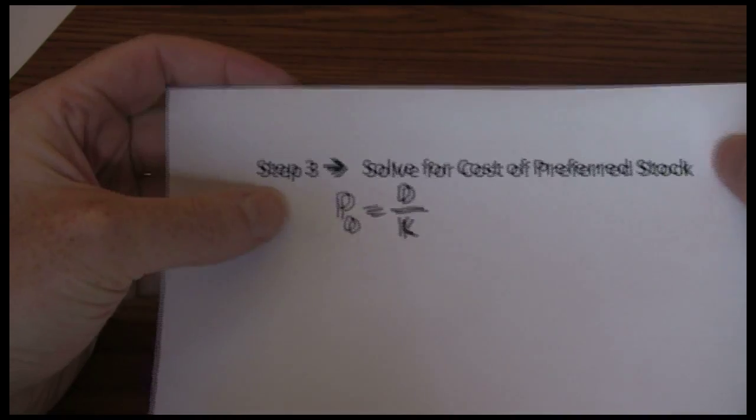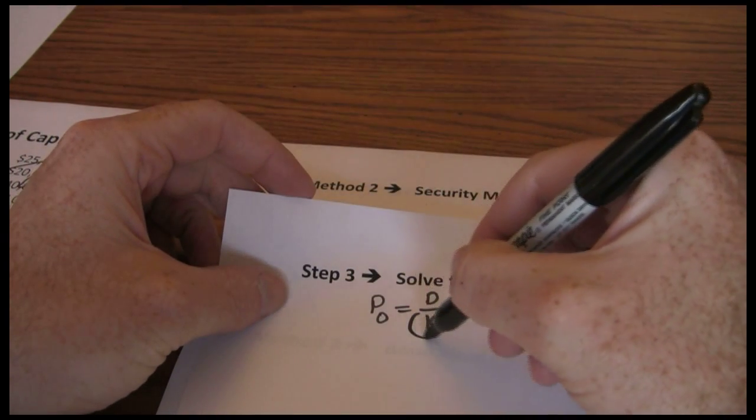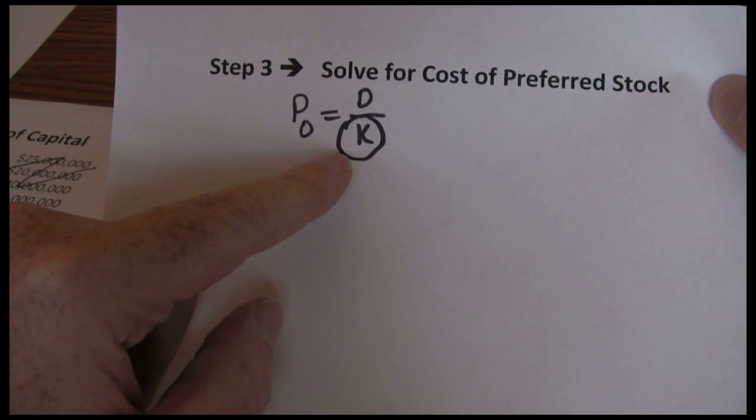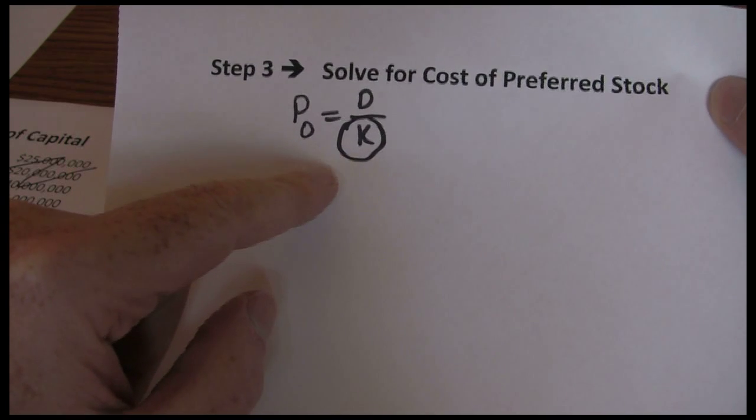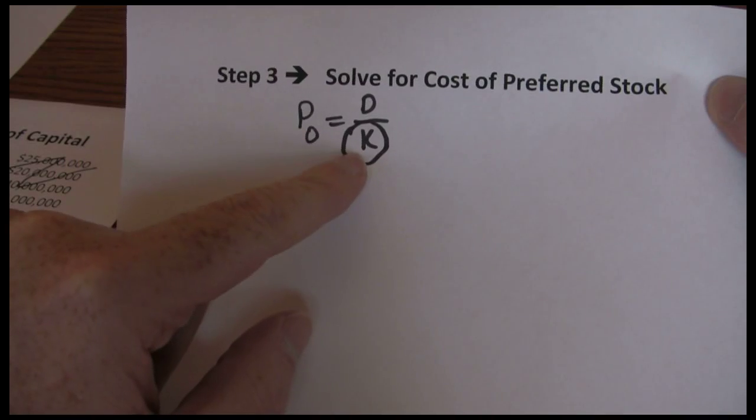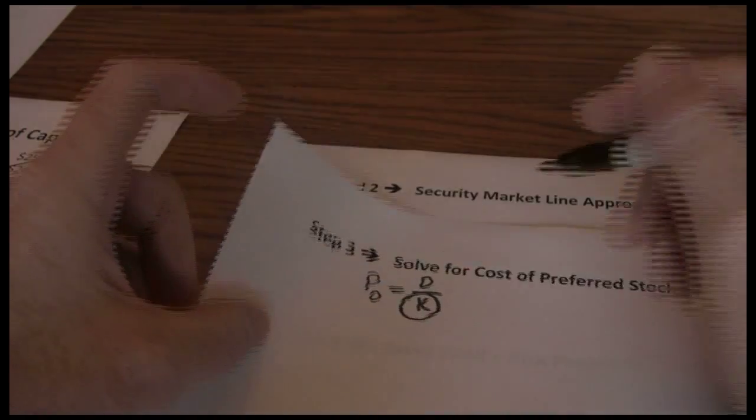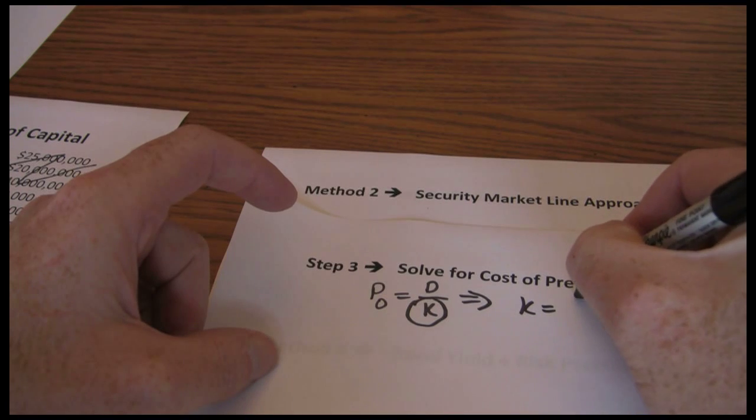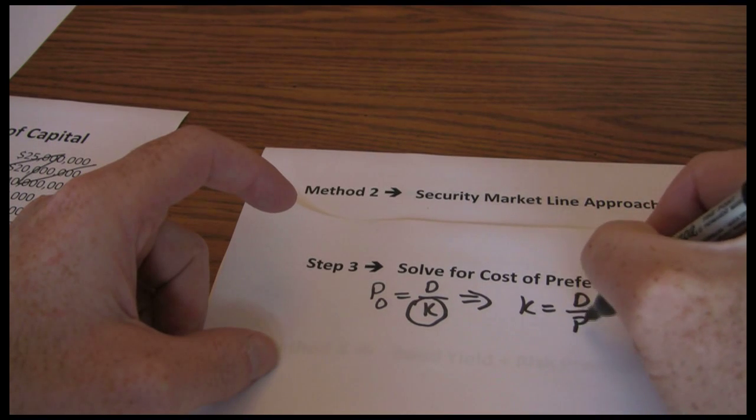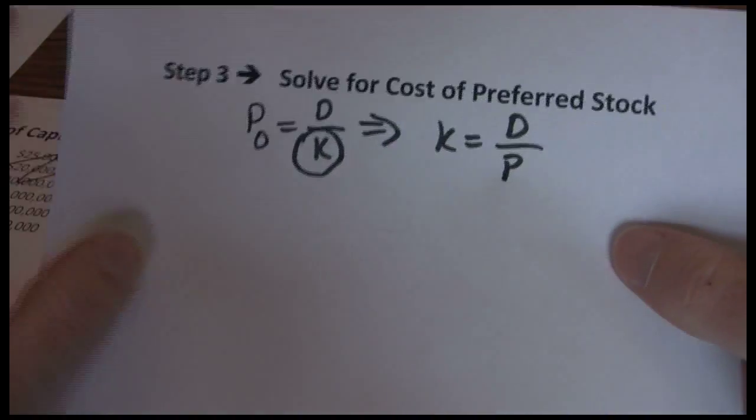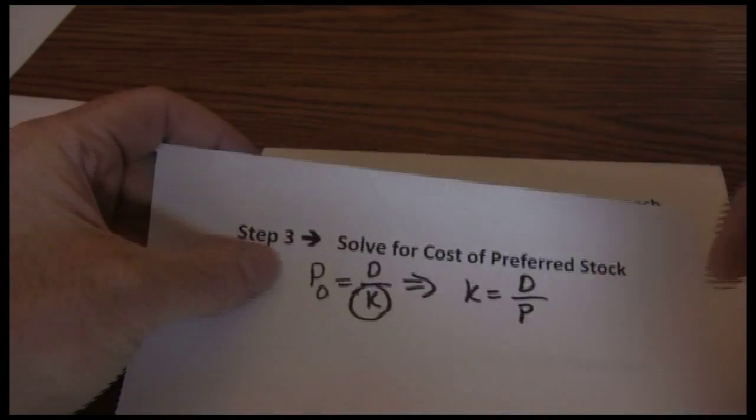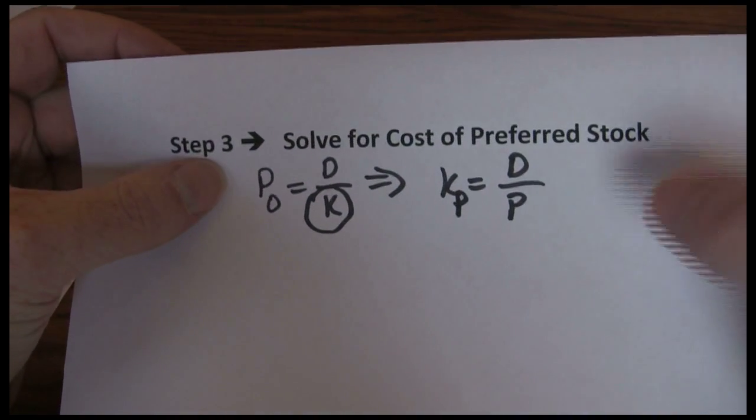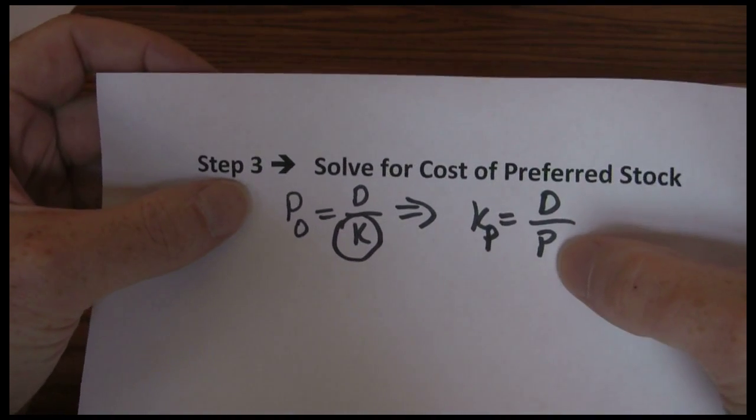Now the cost of preferred stock is going to be that required return that we used in the valuation model because the return to investors is the cost to the firm. So we just want to solve for that required return, and when we do that, we're going to end up with the following formula. The cost of preferred stock financing, we just put a little subscript P there to identify it as preferred stock, is equal to the dividend divided by the price.